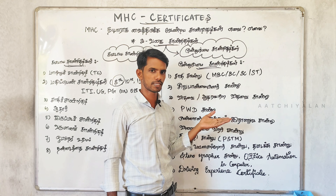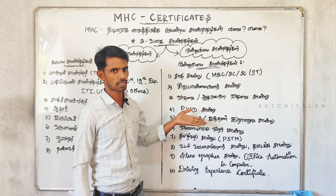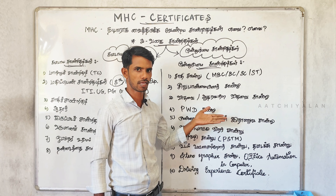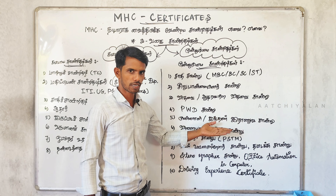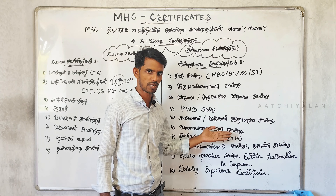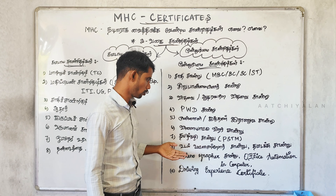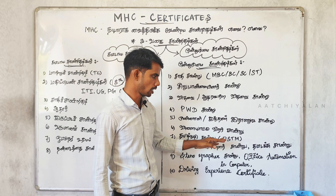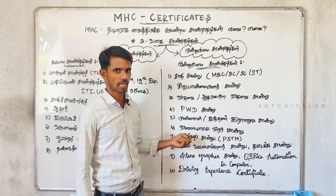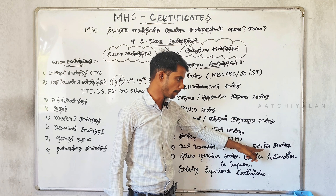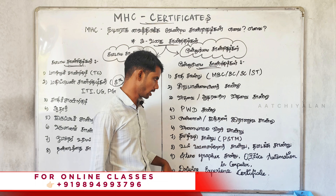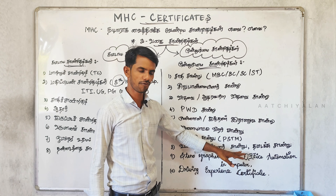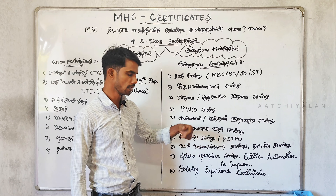If you have any government employees in the family, you have a public work department. If you have an ex-army man, you can take a watchman posting. If you have any sports quota or national level certificate, you can take that certificate. You can take a look at PSTM. You can also look at a Physically Challenged Certificate. You can take a look at the type rating — Steno type — or you can take a look at OAS, that is Office Automation Computer. There is a computer course certificate, that is a COAS certificate.